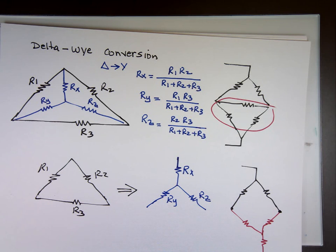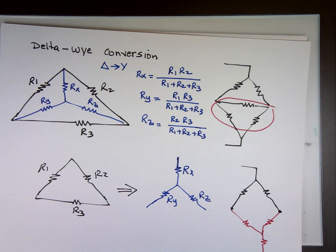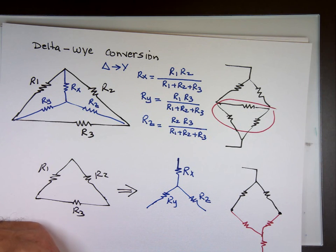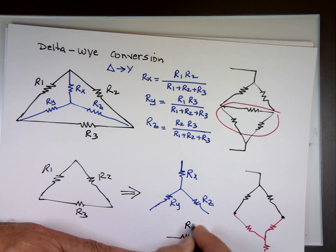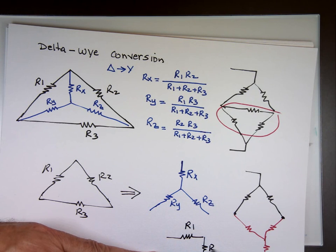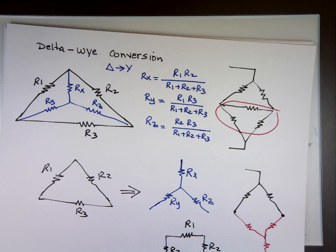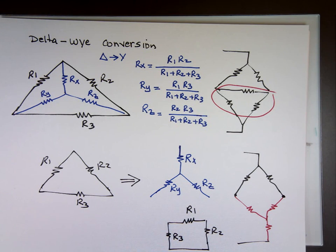We can go from Y to delta. So this is delta to Y. Y to delta. By the way, I drew delta like this, right? The book is sometimes deceiving. They draw delta like this. Does that look like delta connection? Does that look like delta?